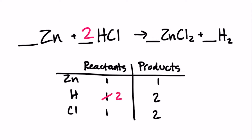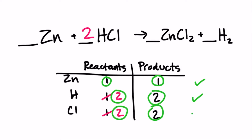Let's start with hydrogen. If I add a two coefficient in the reactant, it doubles the hydrogen and it also doubles the chlorine. This looks balanced already. We have one zinc in the reactant and the product, two hydrogens in the reactant and the product, and two chlorines in the reactant and the product. So this one's balanced with that one move.